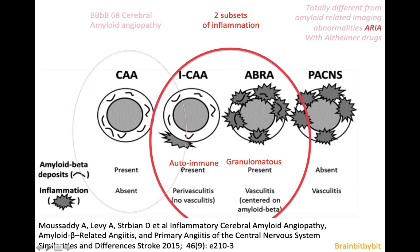Inflammatory CAA has an autoimmune component and is mainly located perivascularly, whereas amyloid beta-related angiopathy (ABRA) resembles the primary angiitis of the central nervous system — that is, the vasculitis. ABRA is often a granulomatous inflammation that is transmural and involves the vessel wall.